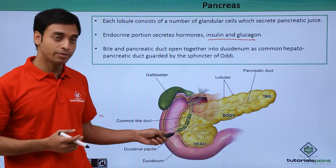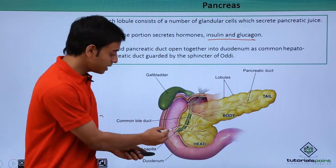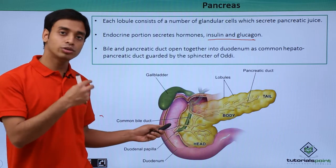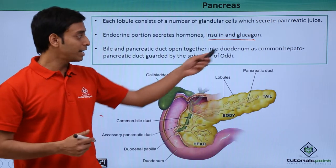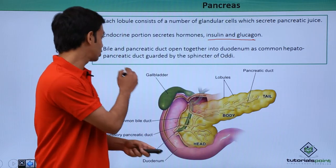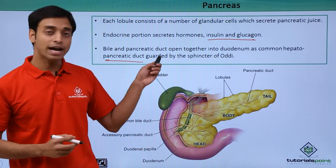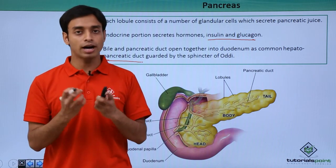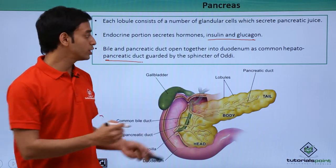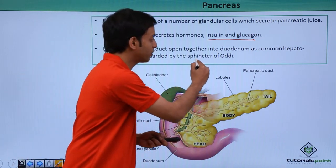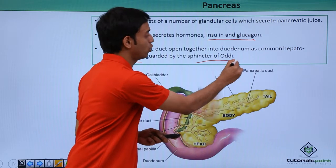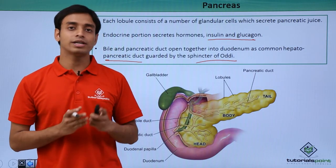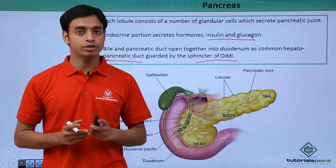The bile duct and the pancreatic duct together open into the duodenum region. This common opening place is known as the hepatopancreatic duct, and this is regulated or guarded by a sphincter muscle known as the sphincter of Oddi.